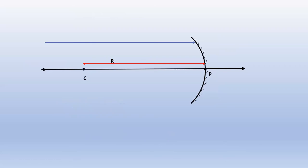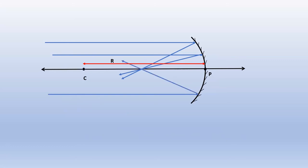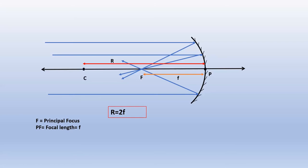Now, imagine a light ray parallel to the principal axis incident on the concave mirror. After reflection, it passes through a point on the principal axis. All light rays parallel to the principal axis, when incident on the mirror, pass through this point called the principal focus. The distance between the principal focus and the pole is called the focal length. Using the assumption that aperture is much smaller than the radius of curvature, we can prove that the radius of curvature is twice the focal length — that is, r = 2f.